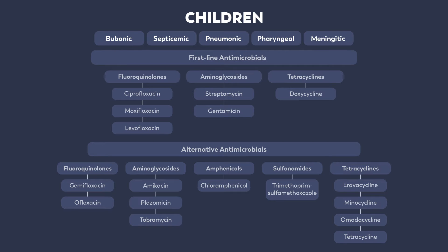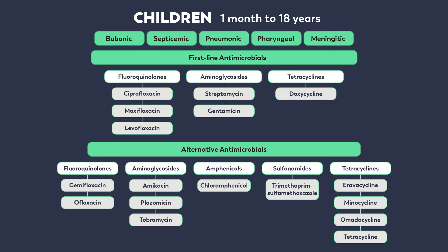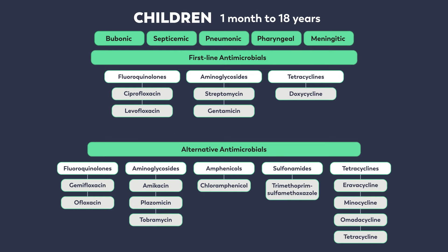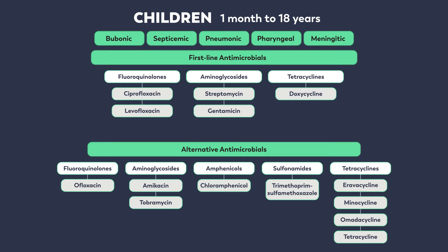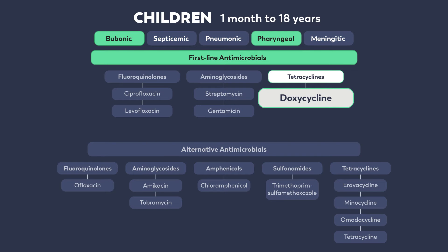Patient age is a factor when making treatment decisions. Recommendations differ slightly when treating children between the ages of 1 month and 18 years. The major differences between treatment recommendations for children versus adults are as follows. Number 1: moxifloxacin is not a first-line agent for children since it is not FDA-approved for this age group. Number 2: gemifloxacin and plazomicin are not recommended as alternative agents in children. For children, as with adults, doxycycline is recommended as a first-line option for the treatment of bubonic and pharyngeal plague only.